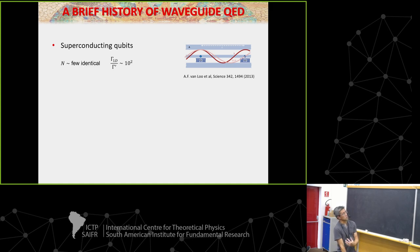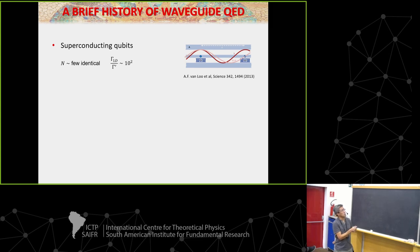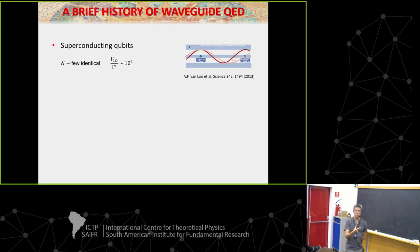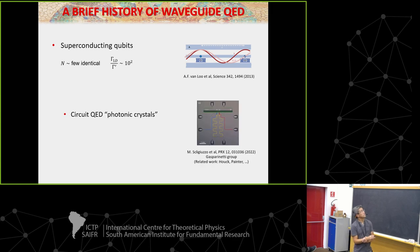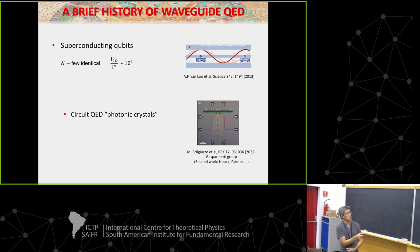There's a problem in superconducting qubits that when you make two, they're not generically going to be identical, so you have to learn how to tune different qubits into resonance with one another. The state of the art is very good single transmon coupling, but if you want a few near-identical qubits coupled to the same transmission line, you can only couple a few. You can also play similar tricks — instead of making an unstructured transmission line, you can start to structure it and build things that look like photonic crystals as well.